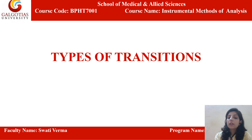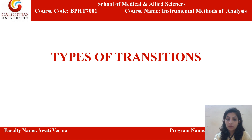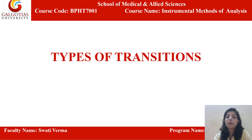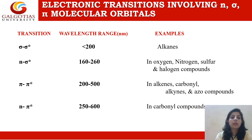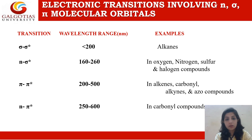In the previous lecture we discussed about the different types of transitions that will occur due to different types of electrons present in your molecules. The three different types of electrons that a molecule can have are sigma electrons, pi electrons, and non-bonding electrons, represented by N. On the basis of these, we can have three different types of transitions involving N, sigma, and pi molecular orbitals.